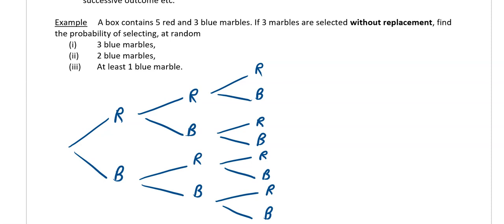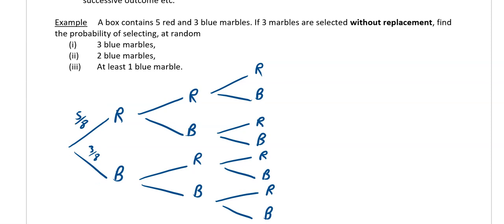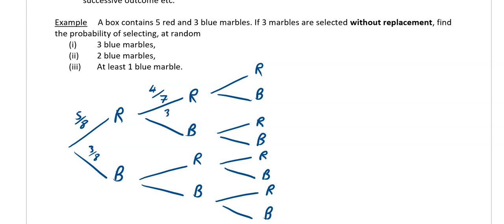Straight out of the bag, we have five red and eight in total, so the chance of getting a red at the start is 5/8. The chance of getting a blue at the start is 3/8. Any pair of branches always adds up to one — that's a very useful rule that makes it easy to work out the corresponding probability.